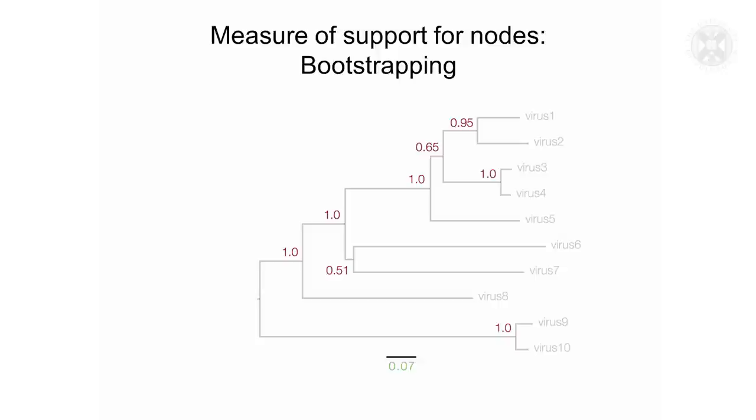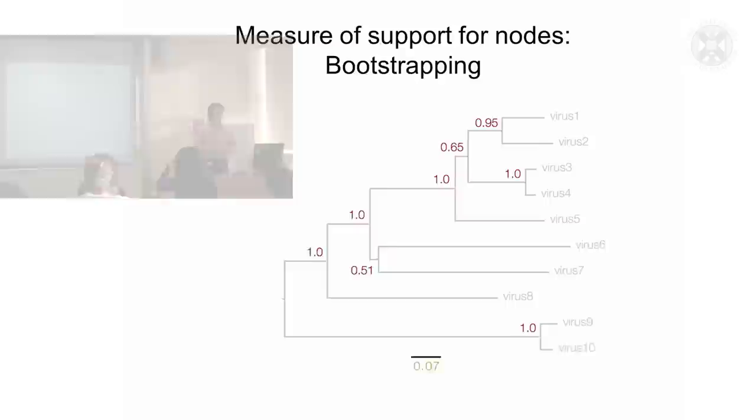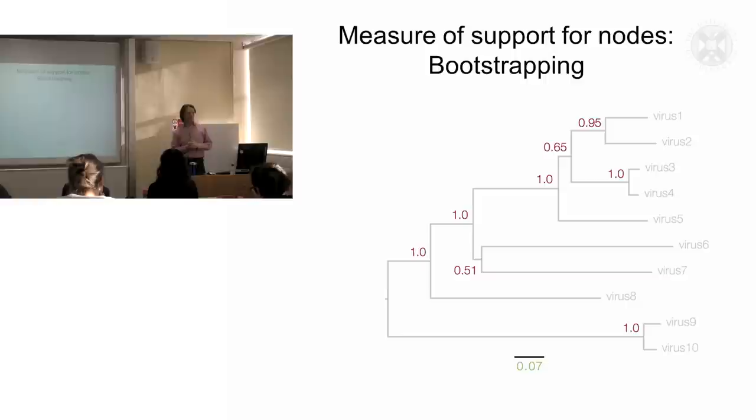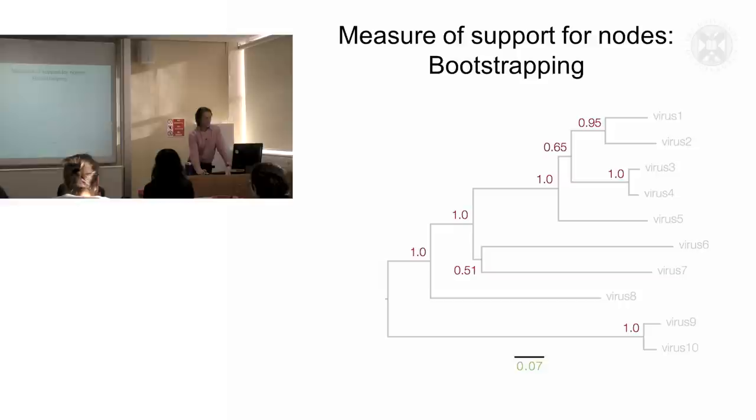The other thing that's important to have is a sense of the level of statistical confidence that we have in the shape of the tree, and particularly the positioning of the nodes, which contributes to the shape or topology of the tree. I can do this by a number of ways. Bootstrapping is one way. Another way is by Bayesian posterior values.